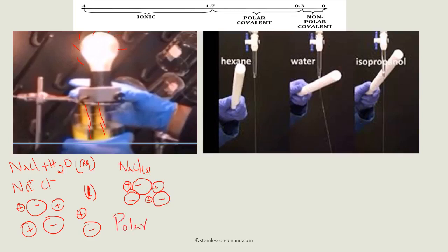Compounds with positive and negative charges are called polar compounds. In general, we can say ionic compounds are polar. As a rule of thumb, if the electronegativity difference is above 1.7 — to be accurate, 1.67, but we take it as 1.7 — those compounds are ionic.